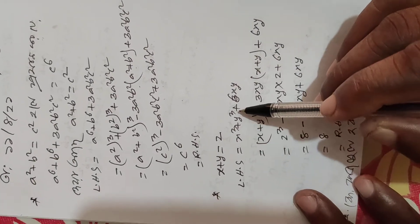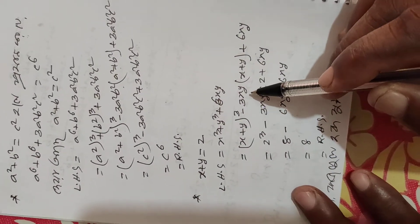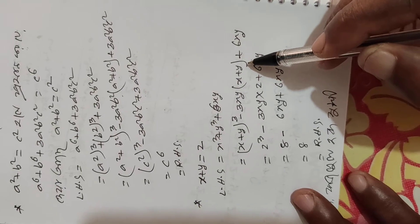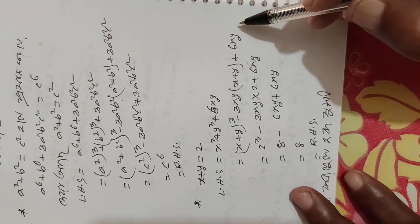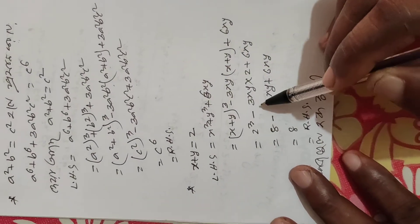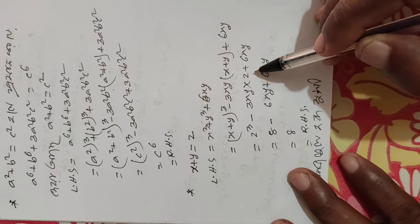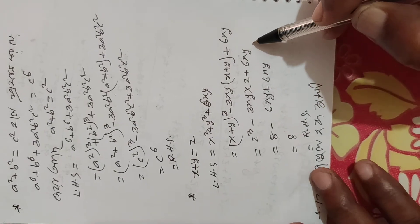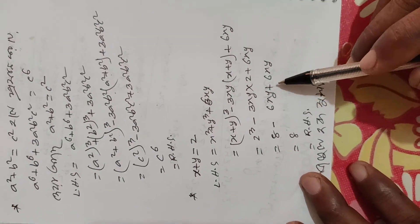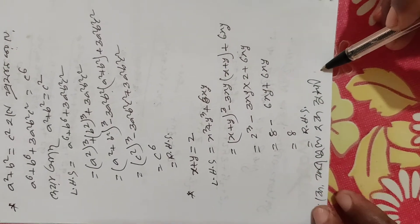Substitution of x³ plus y³ plus (x+1) whole cube minus td, x³ plus x plus y plus 6xy. Manipulate 2 cube minus td, x³ plus x³ into 2 plus 6xy: 8 minus 6xy plus 6xy plus 8.